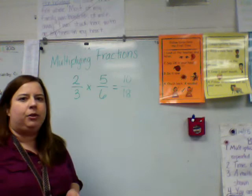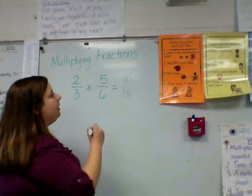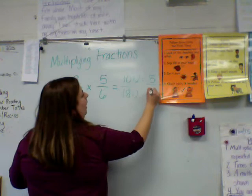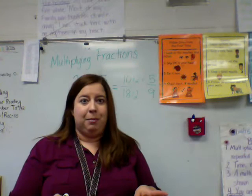That is reducible — they do have a common factor. The greatest common factor that both of these numbers have is two. So I'm going to reduce by doing ten divided by two and eighteen divided by two. Ten divided by two is five, and eighteen divided by two is nine.